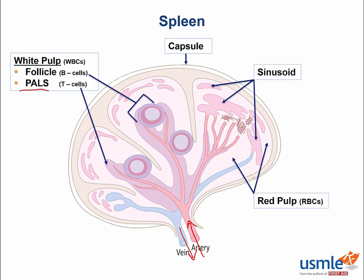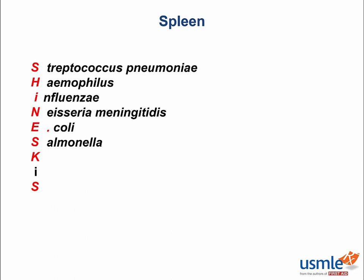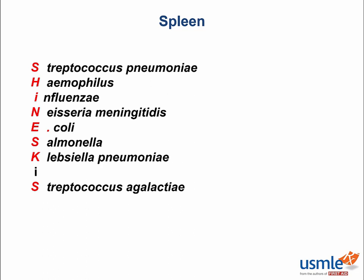The encapsulated bacteria can be remembered with the mnemonic SHINE SKIES, which stands for Streptococcus pneumoniae, Haemophilus influenzae, Neisseria meningitidis, E. coli, Salmonella, Klebsiella pneumoniae, and Streptococcus agalactiae.